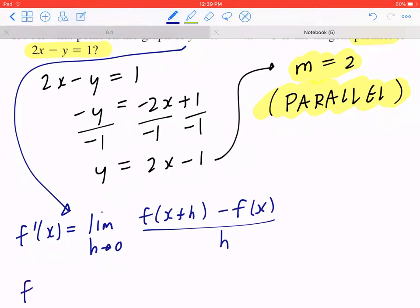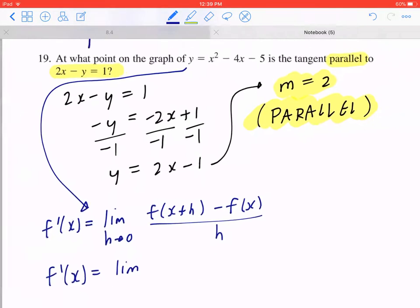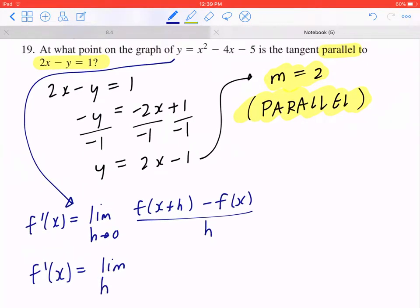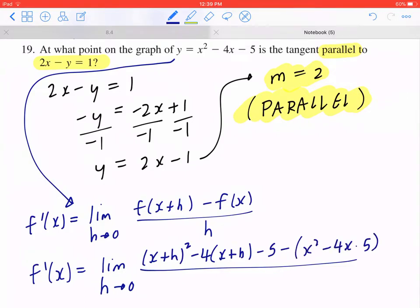In this case, when you plug it in, this will give you the limit as h is approaching 0 of x plus h quantity squared minus 4 times x plus h minus 5 minus, open a bracket, x squared minus 4x minus 5, close the bracket, all over h.